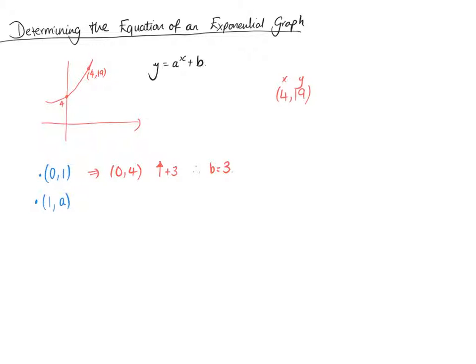So we're going to substitute. We've got y equals a^x plus b. So we substitute in: y is 19, and that's going to be equal to a to the power of 4, plus b, which is 3.